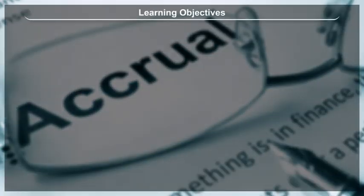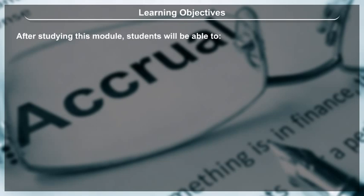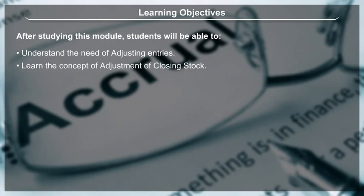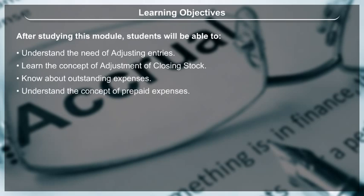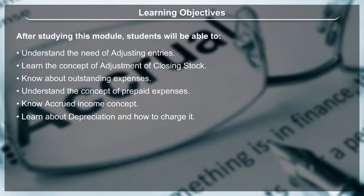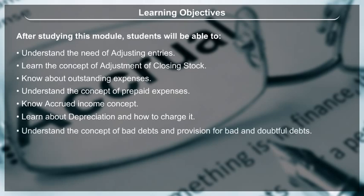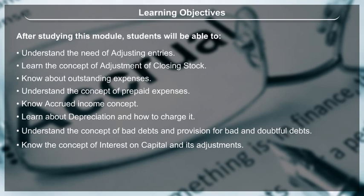Learning Objectives: After studying this module, students will be able to understand the need of adjusting entries, learn the concept of adjustment of closing stock, know about outstanding expenses, understand the concept of prepaid expenses, know the accrued income concept, learn about depreciation and how to charge it, understand the concept of bad debts and provision for bad and doubtful debts, know the concept of interest on capital and its adjustments, and learn to calculate manager's commission.